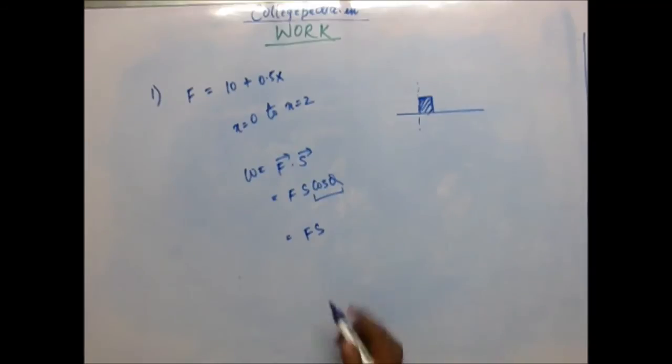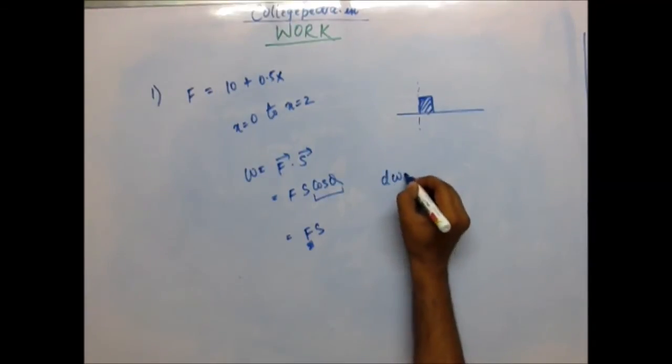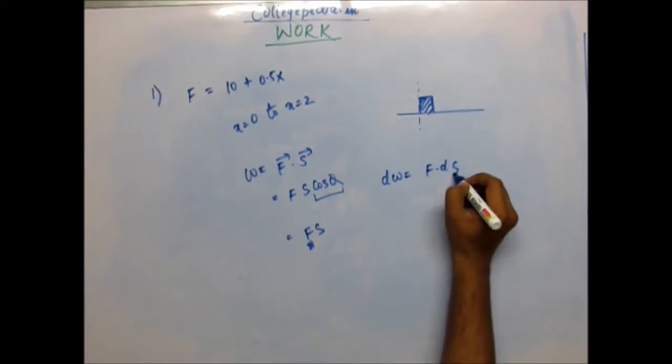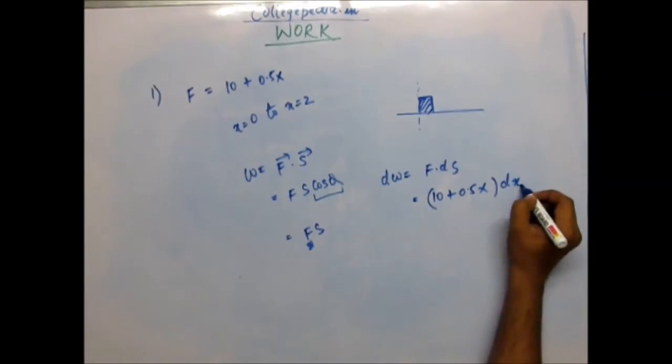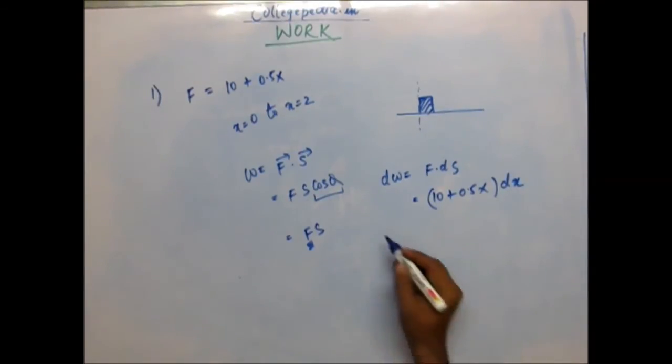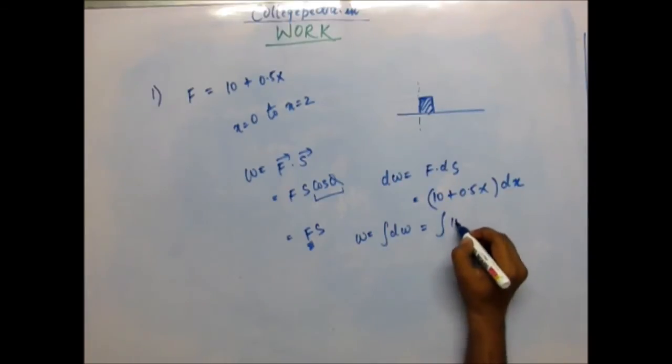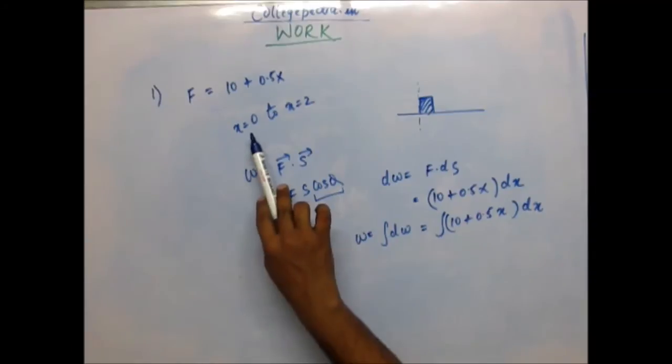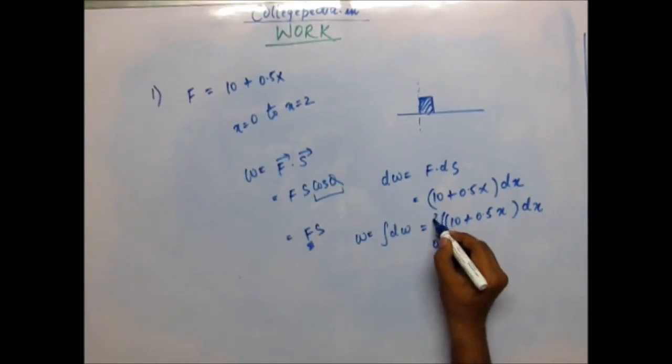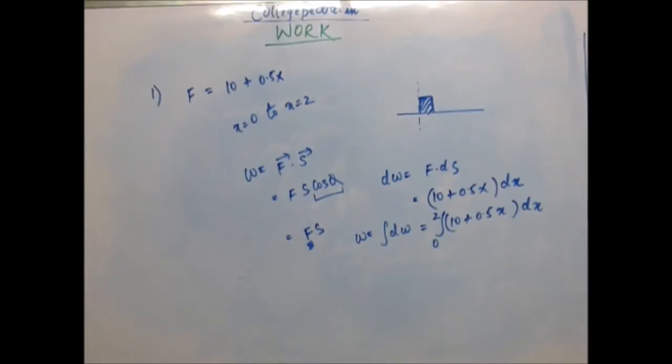F dot s, this cos(θ) would be 1, so what you have is work is simply force into displacement. But the problem is you don't have one single value of force, then you'll have to go for integration. The small amount of work done would be force into small amount of displacement. Force is 10 + 0.5x, this is the force. Small amount of displacement will be dx. So the total work would be summation of these small works: that would be the integral of (10 + 0.5x)dx. Now put the limit of integration. The limit I have said displacement is from 0 to 2, so the limit will be 0 to 2.